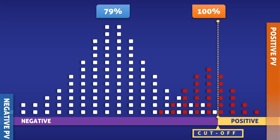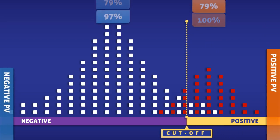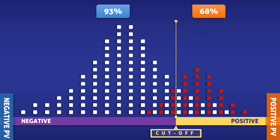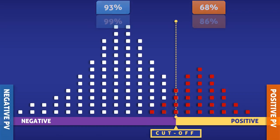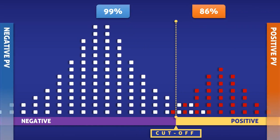Now let's return the cutoff level for a positive test back to the middle so that we can see what happens when the amount of overlap between the two groups changes. As the amount of overlap increases, the number of false positives and false negatives increase too. Expectedly, this results in a lower positive and negative predictive value. And conversely, if there was less overlap, then both the positive and negative predictive value of the test would be higher.